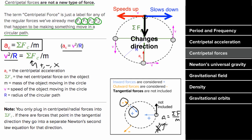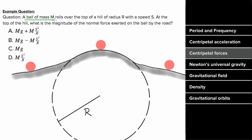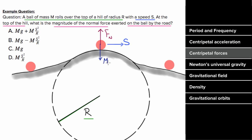Imagine a ball of mass m rolling over the top of a hill of radius r at speed s. At the top of the hill, what's the magnitude of the normal force on the ball from the road? There's an upward normal force and a downward force of gravity. These two forces are not equal and opposite — if they were, the ball would travel in a straight line. But the ball accelerates downward, so the normal force must be less than the force of gravity.